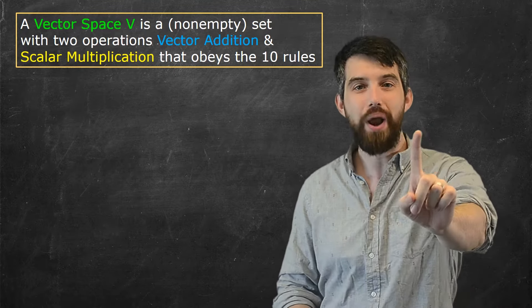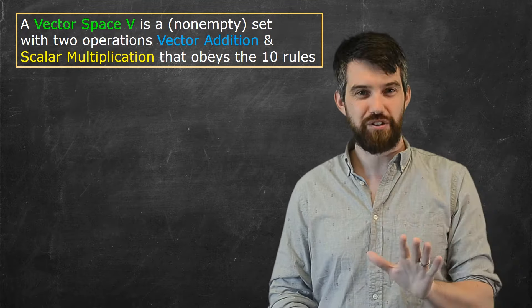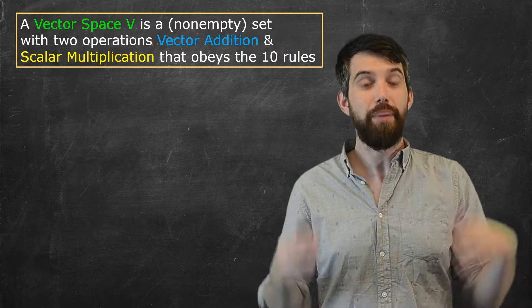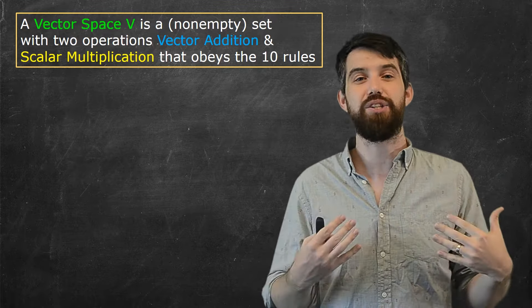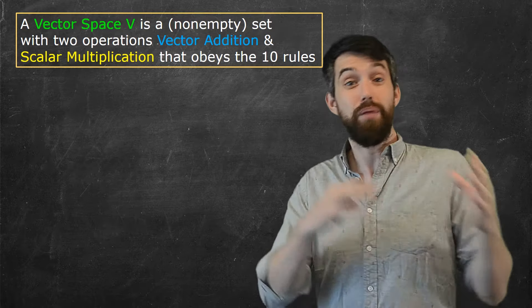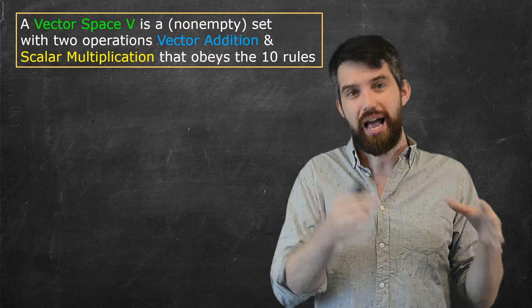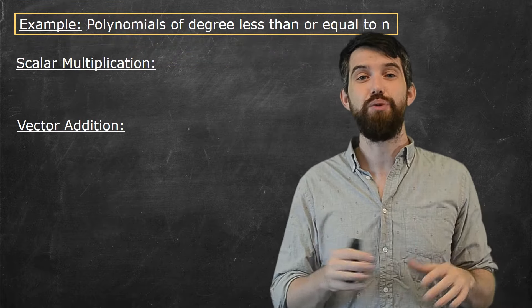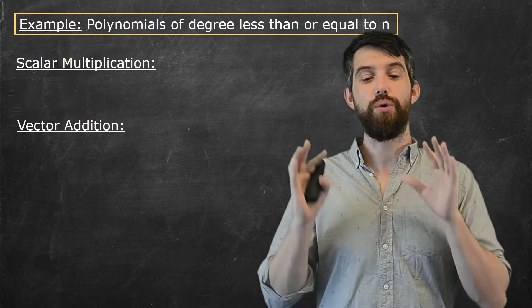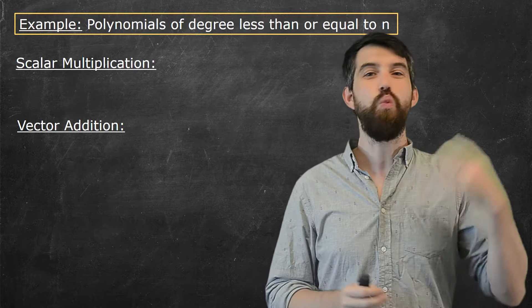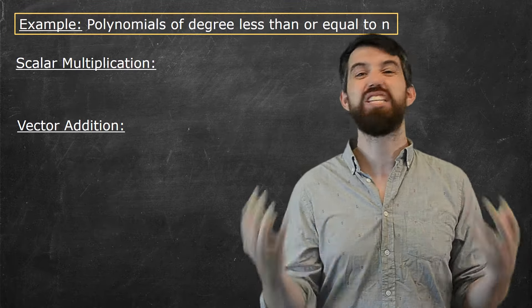So, let me give you one example. Let me give you an example of a vector space that is not Rn, that looks different from Rn, but is nonetheless a vector space and nonetheless obeys this list of rules, and where most of the analysis of linear algebra applies in this context as well. So, the example I'm going to give you is polynomials of degree less than or equal to n, things like 1 plus x squared plus x to the fourth.